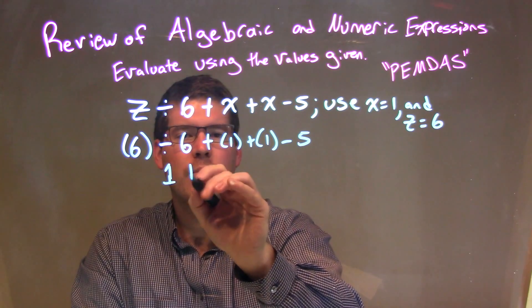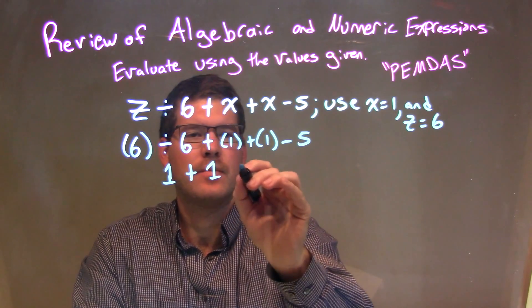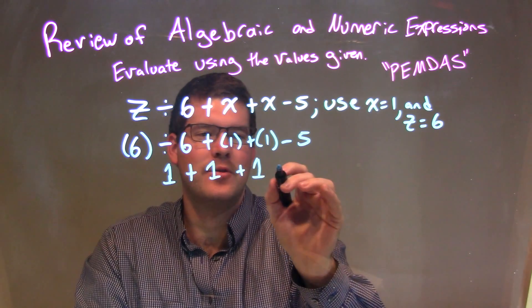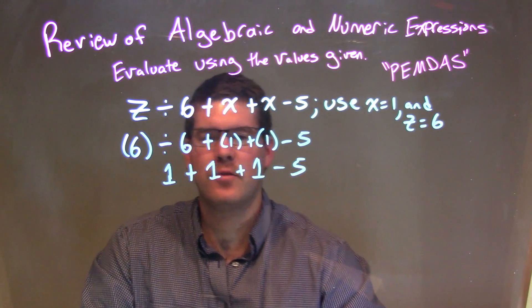Then we can bring down everything else, this 1, this 1, and 1 is pretty groovy, and then minus 5.